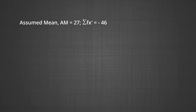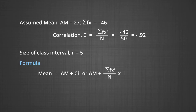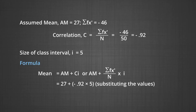With AM equals 27 and sigma fx-dash equals −46, the correction C equals sigma fx-dash upon n equals −46 upon 50, which is −0.92. The size of the class interval i equals 5. The formula is: Mean equals assumed mean plus (sigma fx-dash upon n) times i. Substituting values: 27 plus (−0.92 times 5) equals 27 minus 4.6, which gives a mean of 22.40.